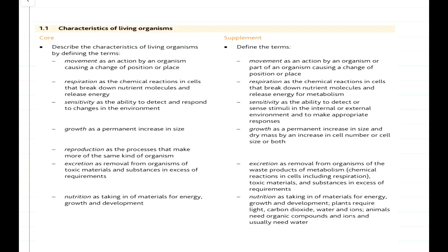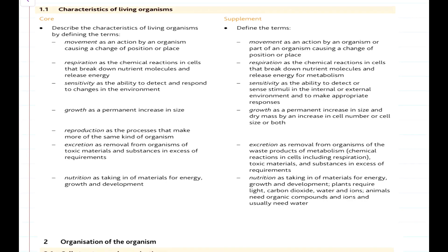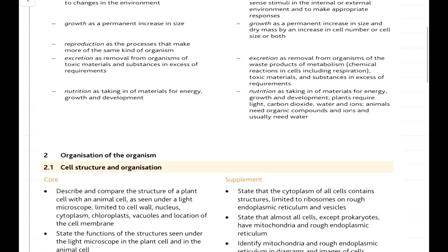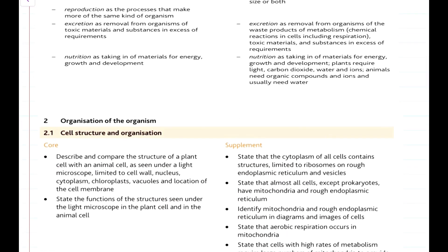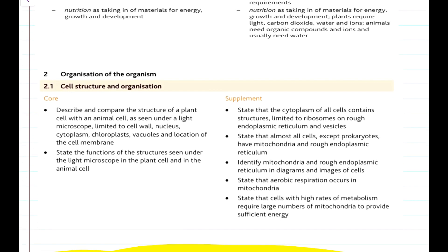Today, we'll start together the IGCSE syllabus. The first points which need to be covered according to the syllabus are characteristics of living organisms, and then organization of the organism which contains cell structure. Today, we'll talk about cell structure and the difference between plant and animal cell.